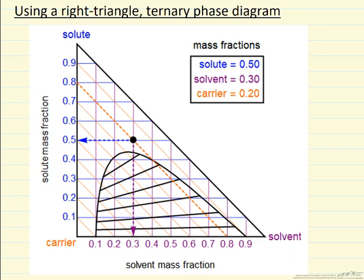I've selected a point, the black dot, and I want to show what composition that corresponds to. The solute mass fraction is shown on the y-axis, and the black dot corresponds to the mass fraction of 0.5 for the solute.